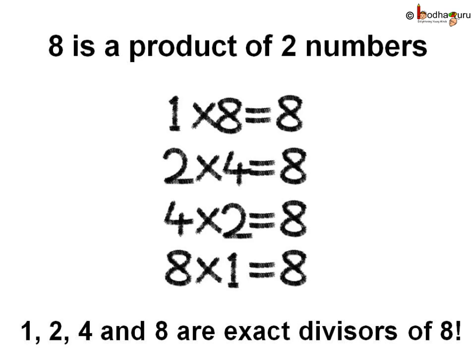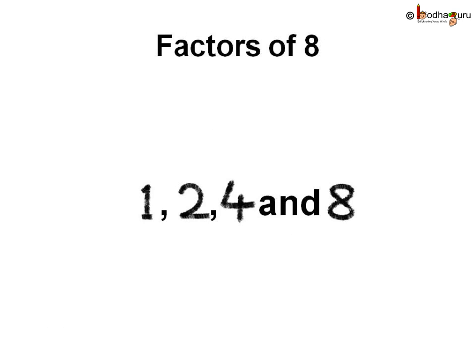Here, 1, 2, 4 and 8 are exact divisors of 8, as each of these divides the given number 8 with no remainder. These numbers 1, 2, 4 and 8 are called factors of 8.